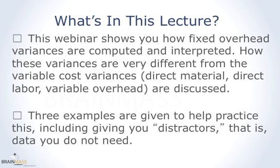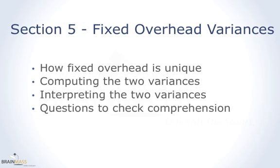I'm going to give you some examples to practice on, and I'm going to include data you don't need. Those are called distractors, and they help you get more solid in knowing what you do need. I'm going to discuss how fixed overhead is different, show you and compute the two variances, help you interpret them, and then give you a couple of comprehension check questions.